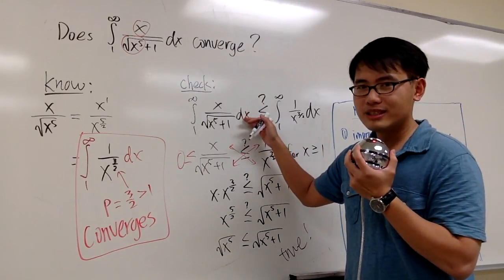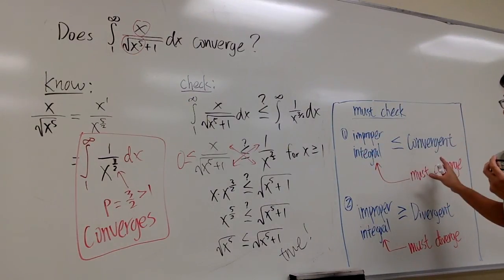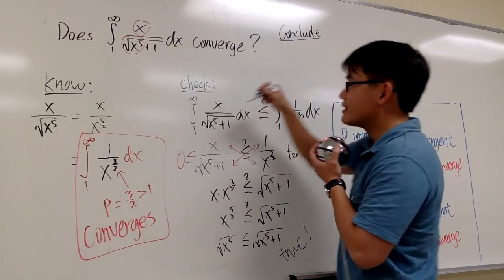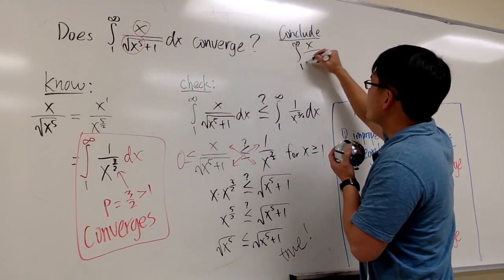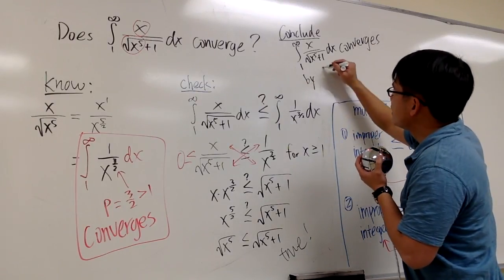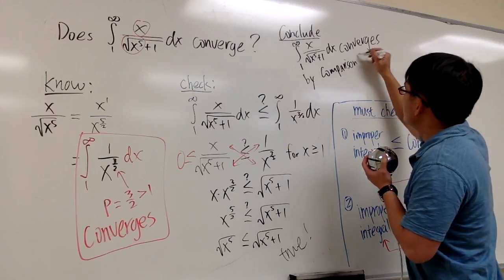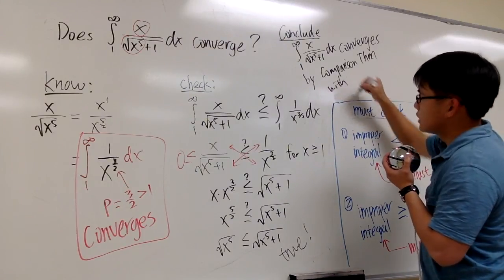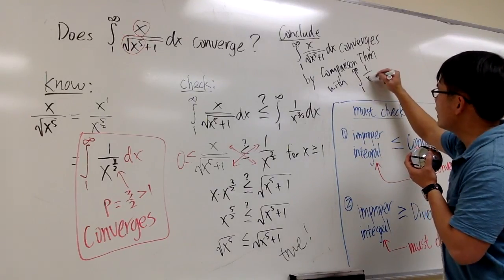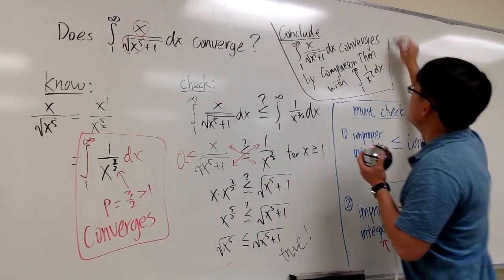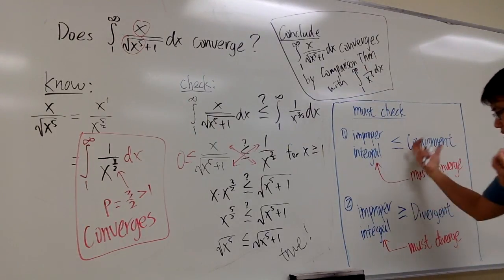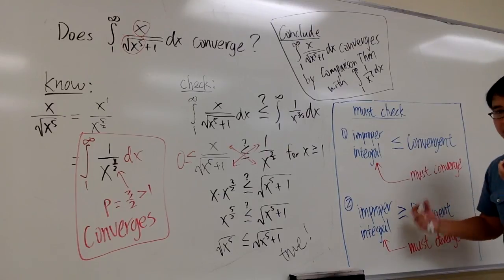Therefore, the inequality holds, and we can use the comparison theorem. We conclude that the integral from 1 to infinity of x over square root of x to the 5 plus 1 dx converges, by comparison with the convergent integral from 1 to infinity of 1 over x to the 3/2 dx. These are the three steps: pick something you know, do the check, and draw a conclusion. The most important step is knowing when to set up which inequality.